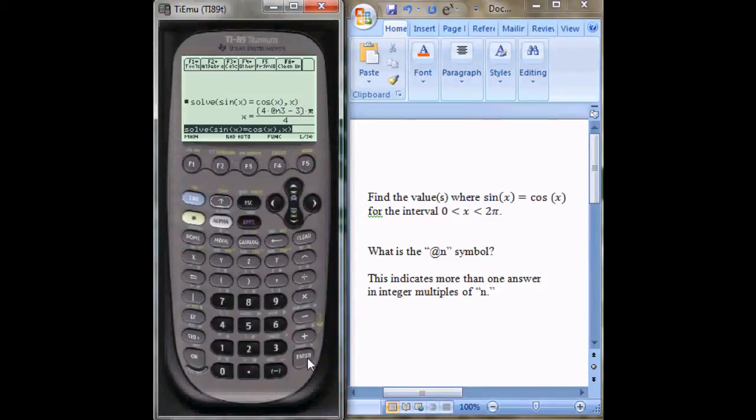And you get an answer that looks like this. It's 4 times at-end 3 minus 3 times pi over 4. It doesn't look like it makes too much sense at the beginning, but if you think about it,